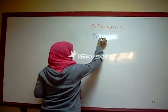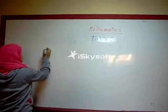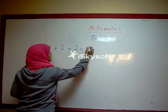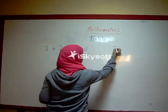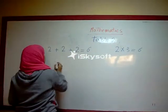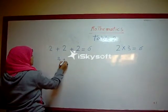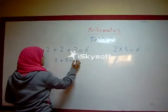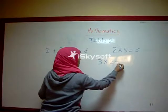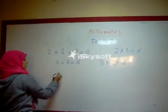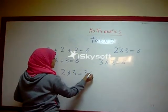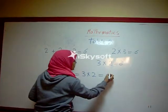Two plus two plus two equals six. Two times three equals six. Three plus three equals six. Three times two equals six. Then two times three equals three times two equals six.